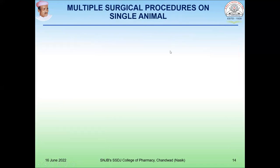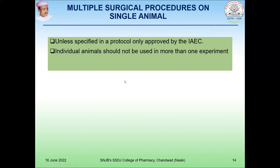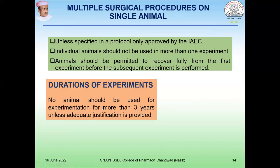Regarding multiple surgical procedures on a single animal: if multiple procedures must be carried out on a single animal, specific precautions are required. Unless specifically approved by the IAEC, individual animals should not be used in more than one experiment. The animal should be permitted to recover fully from the first experiment before the subsequent experiment is performed. No animal should be used for experiments for more than three years unless adequate justification is provided.